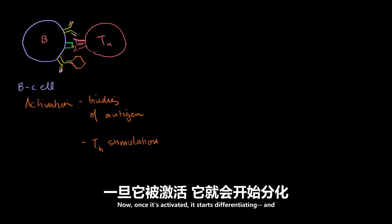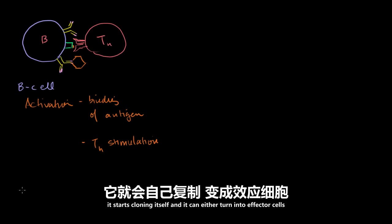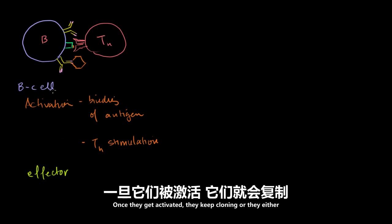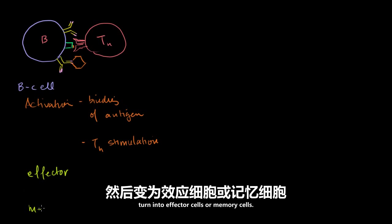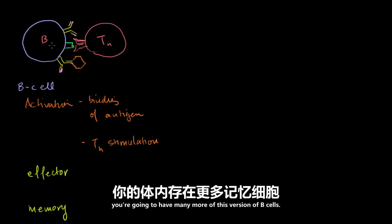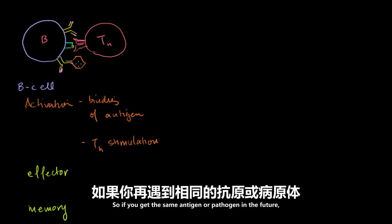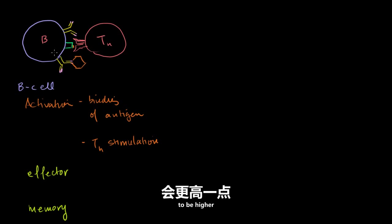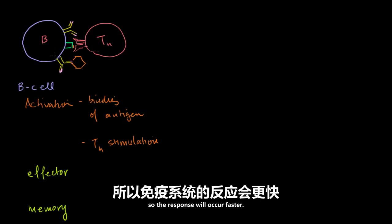Now once it's activated, it starts differentiating, and it differentiates, it starts cloning itself, and it could either turn into effector cells. And this is true of B cells or T cells. Once they get activated, they keep cloning, and they either turn into effector cells or memory cells. Memory cells stick around a lot longer, so that in the future you're going to have many more of this version of B cell. So if you get the same antigen or pathogen in the future, the likelihood of it bumping into this type of B cell is going to be higher, so the response will occur faster.